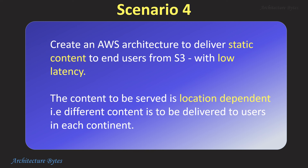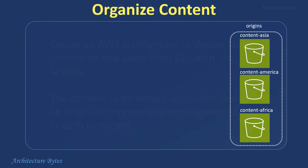Create an AWS architecture to deliver static content to end-users from S3 with low latency. The content to be served is location-dependent — different content is to be delivered to users in each continent. Organize the content in S3 geography-wise, that is, in separate buckets or subfolders. This will serve as the origins for a CloudFront distribution.